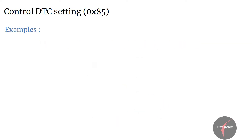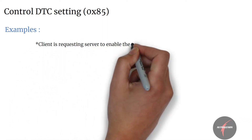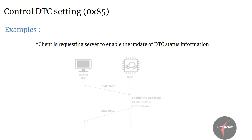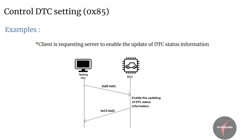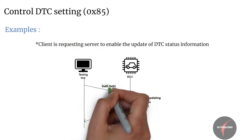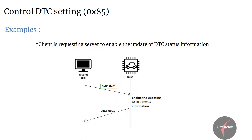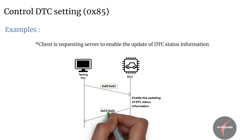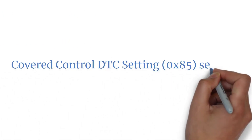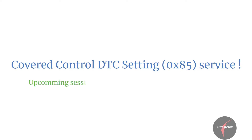Let's take a look into the situation where the client has to enable the update of DTC status information. The server shall respond with Control DTC Setting response SID set to C5 with the sub-function set to 01, which is the same as the request. With this we have covered the Control DTC Setting 0x85 service in detail. In the upcoming session we will have a look into the Read Data By Identifier 0x22 service. Thank you.